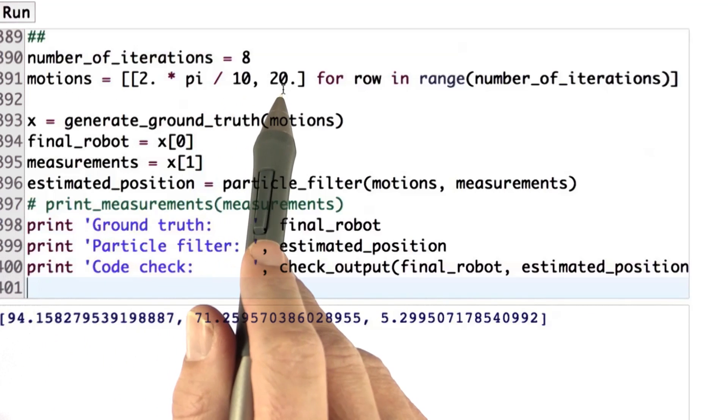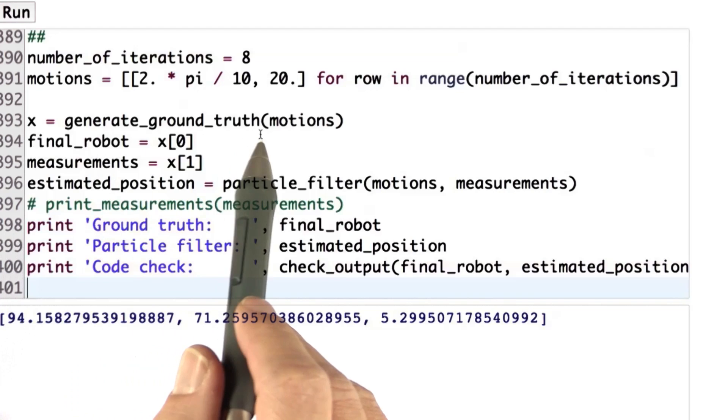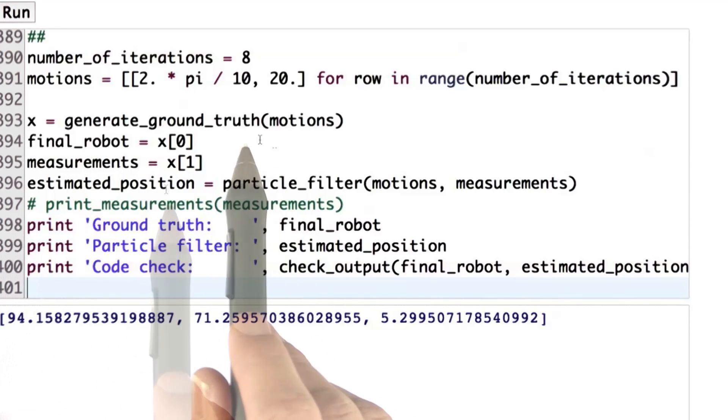Our test case will be eight steps long. There's the same motions vector we had before of a slight turn on a circle. Generate ground truth gives us a sequence of measurements and a robot position that we can split as follows using a robot simulation.